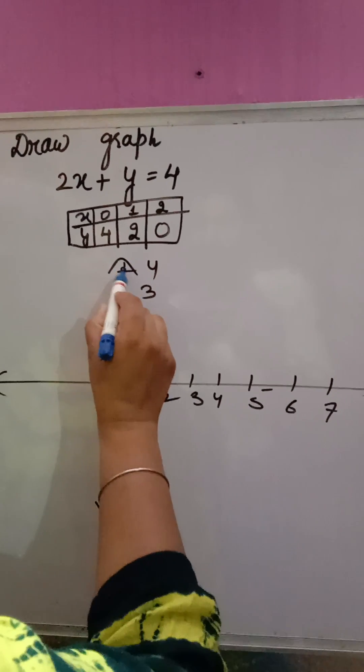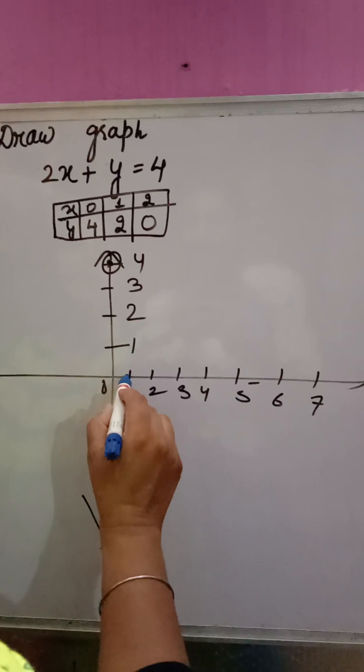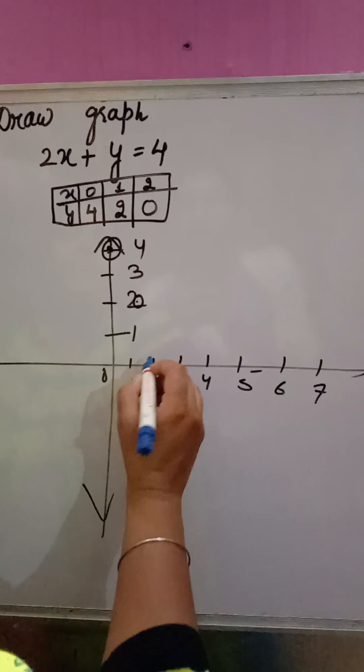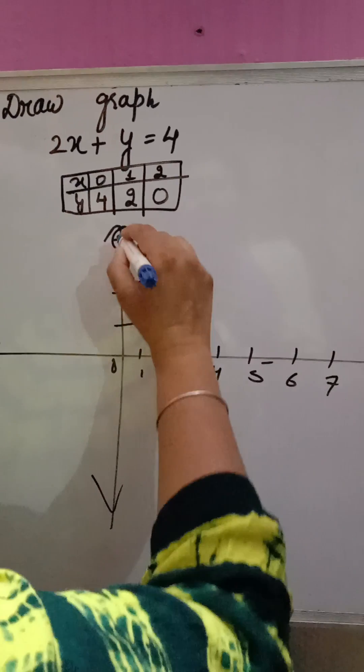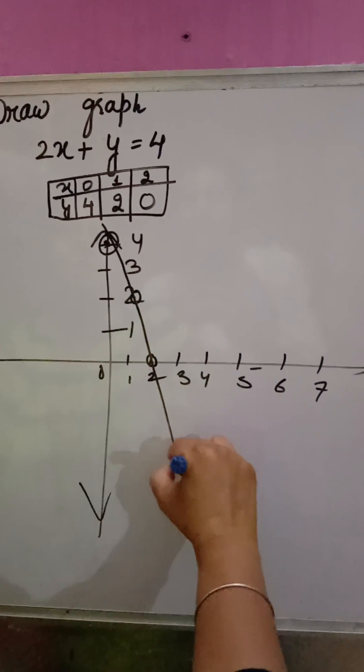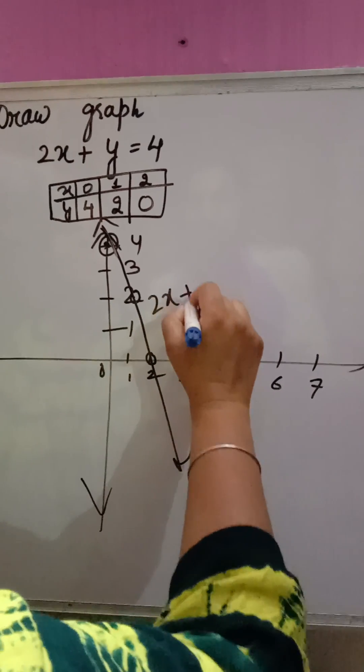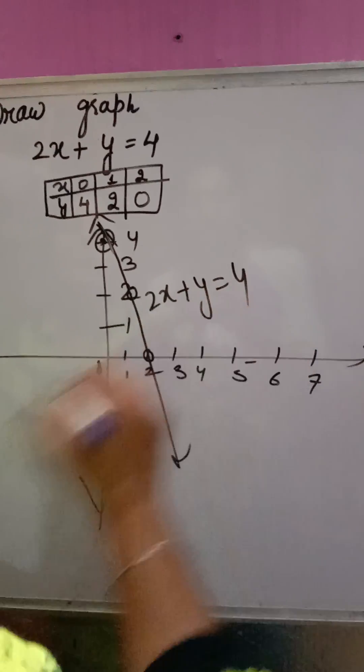Now you make x 0, y 4, one point will come here. x 1, y 2, one point will come here. Then x 2, y 0, one point will come here. With the help of scale, you have to join this point. So this is the required graph of 2x plus y is equal to 4. Thank you.